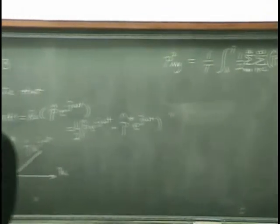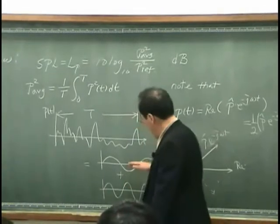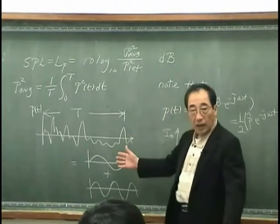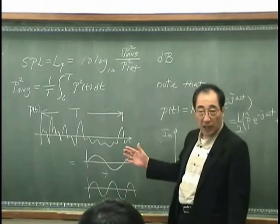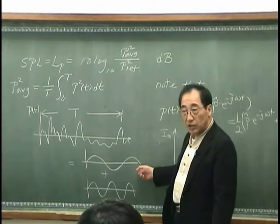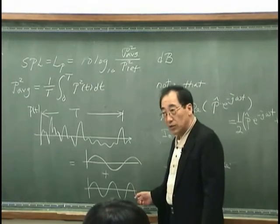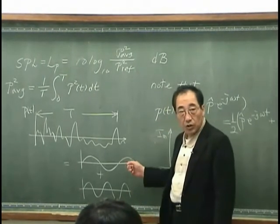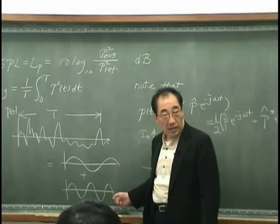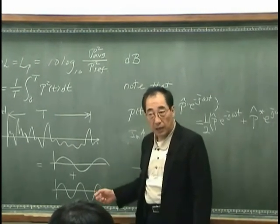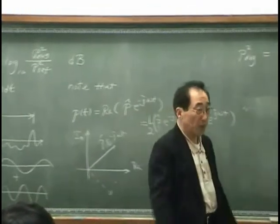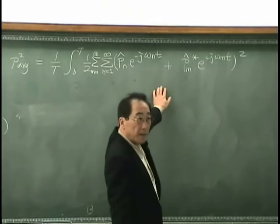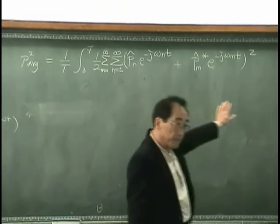Because, suppose I have this signal, and this signal, and this signal, and I am squaring this signal. What I will get? Square of this signal, and the square of this signal. But, as well as, I will have this one multiplied by this, this one multiplied by another component. Therefore, I have to write it this way.